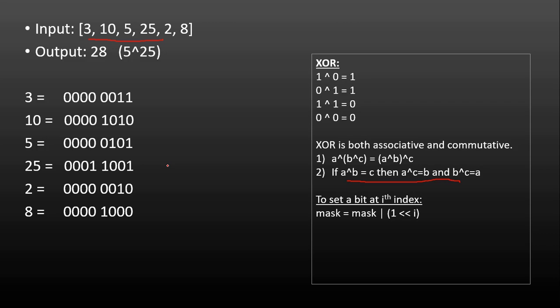Any number which is the largest will have its leftmost bit set. Between any two given numbers, if the leftmost bit is set further left for one number, that number is larger. For example, 25 is greater than 5 — 25 has its leftmost bit at the 4th position whereas 5 has it at the 6th, so 4 is leftmost, making 25 larger. We can use this knowledge to determine the largest XOR.